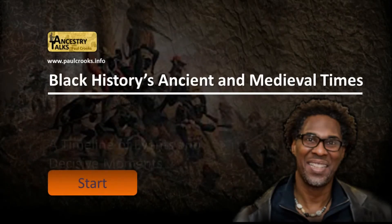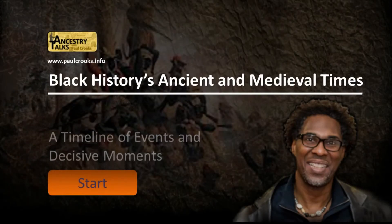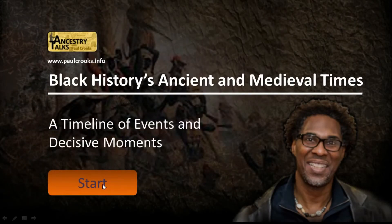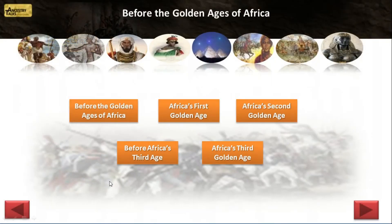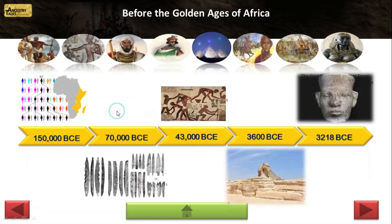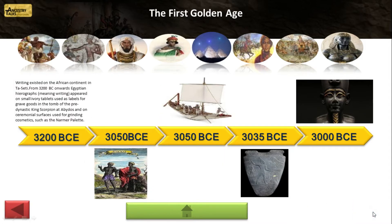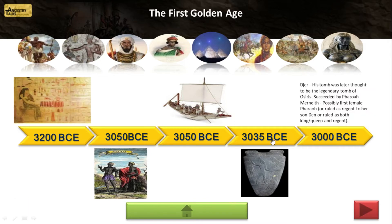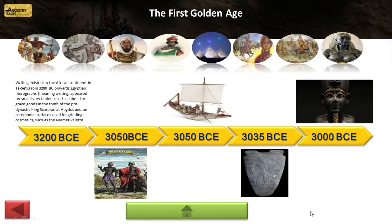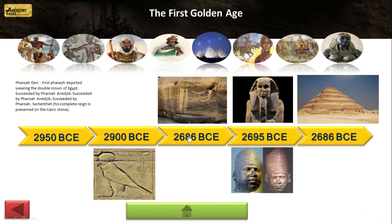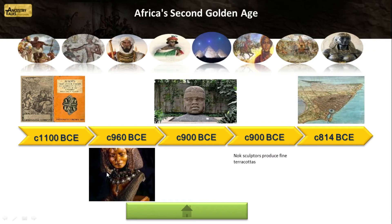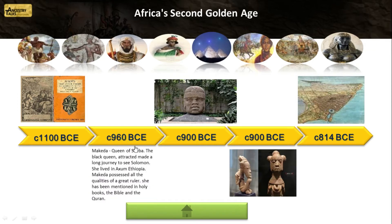The Black History Ancient and Medieval Timeline is a unique interactive PowerPoint. It's designed to help you learn, engage and remember more information than ever before about ancient and medieval black history. Covering a range of historical events, the timeline can play a vital role in improving your understanding of key players and their roles in transformative historic events.